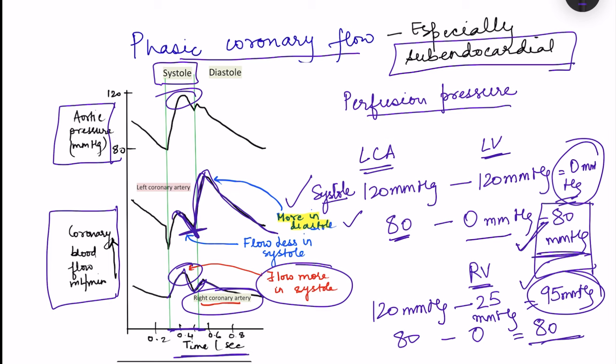When heart rate increases, the duration of diastole decreases, leaving less time for coronary blood flow. Although increased metabolites cause more arteriolar dilation to compensate, this compensation is compromised if there is a blockage in the vessels. Therefore, during tachycardia a person becomes more prone to ischemic damage, especially in the subendocardial region, since those vessels are compressed during systole.